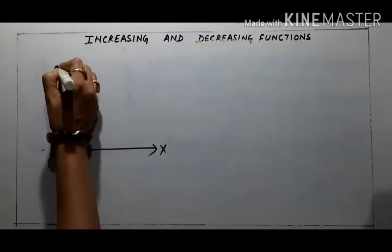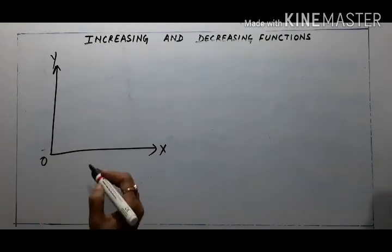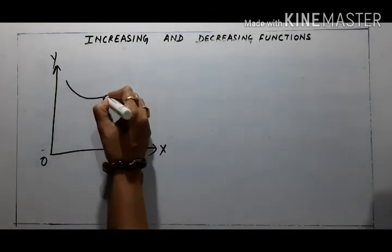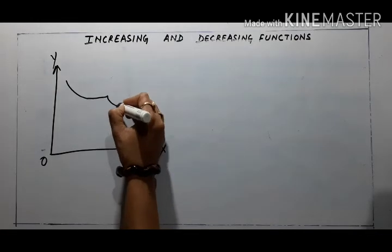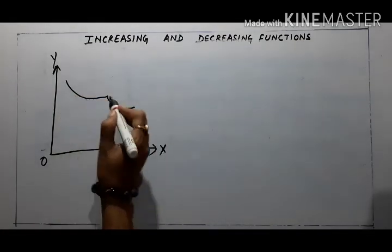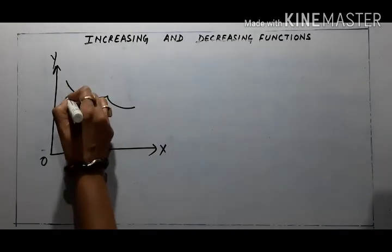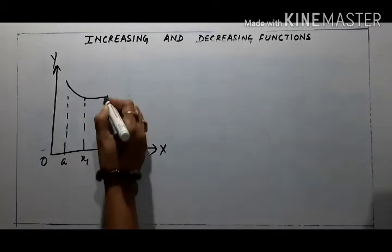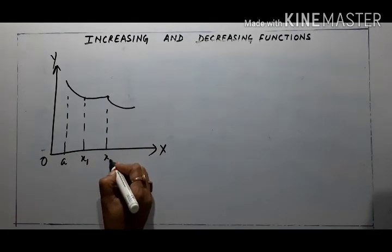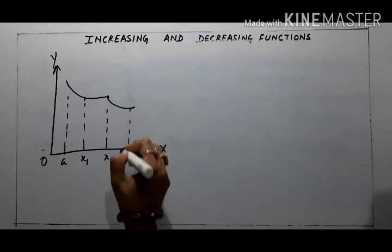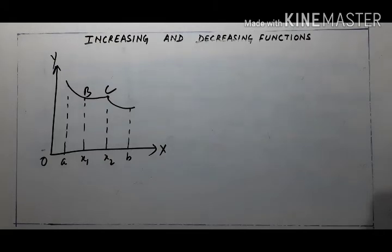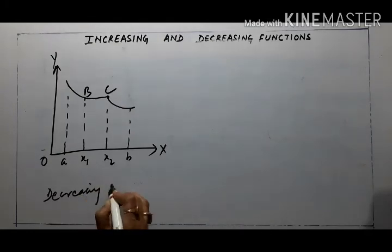Now here we have the x-axis, y-axis, and origin. Here the function is decreasing. As it decreases, it becomes equal at some point, then decreases again. Taking point A, then X1, then X2, and then B — this figure represents the decreasing function.